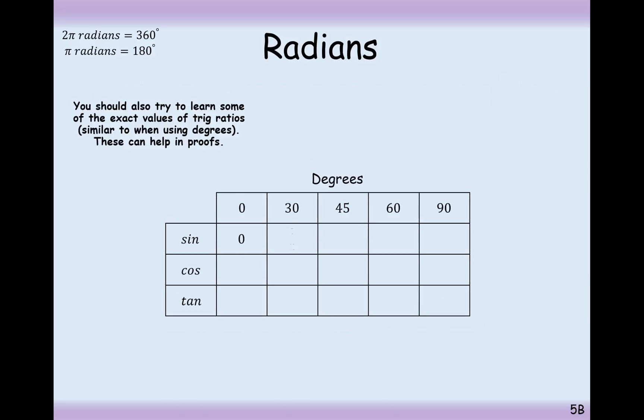At GCSE level, you should have remembered these trigonometric ratio values for 30, 45, and 60, and 0 and 90 as well can be included.